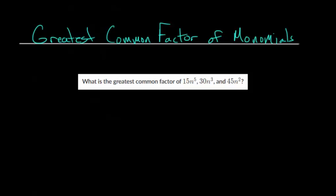In this video, I'd like to talk about finding the greatest common factor of monomials. Remember, a monomial is just a one-term expression. So the three given in the example problem, 15n to the fifth, 30n to the third, and 45n squared, these are all separate examples of monomials.